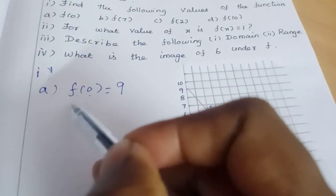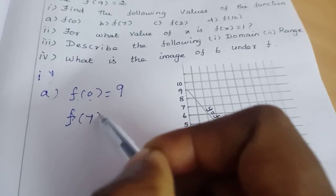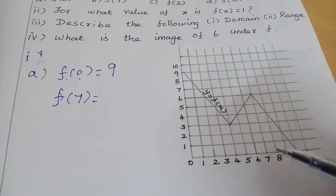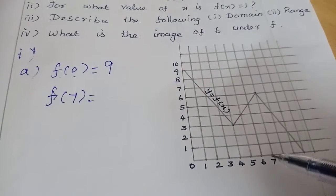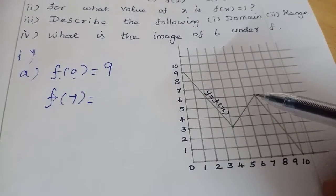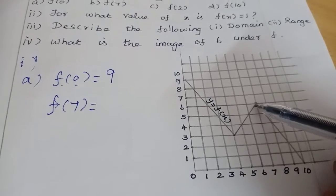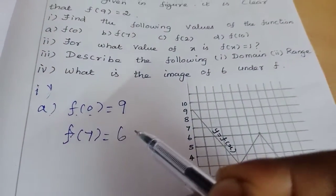Then f(7). So x value of 7, we look at the graph. So equal to - this is 7. At 7, we draw a vertical line. So the y-value is 6. x value of 7 equals 6.